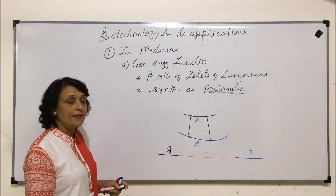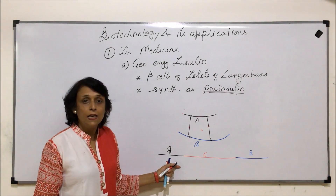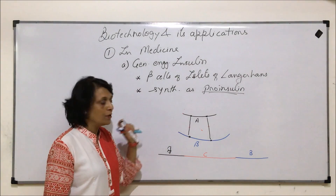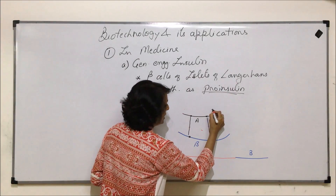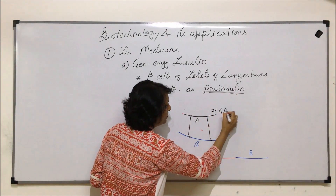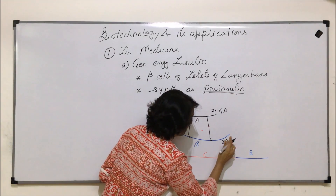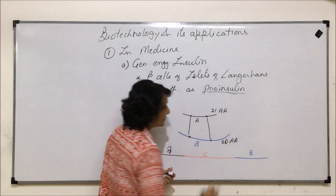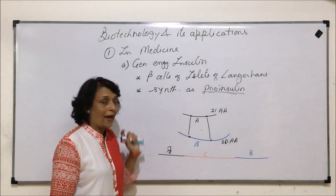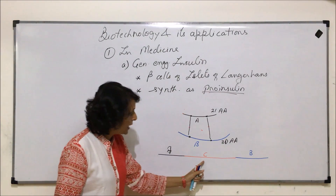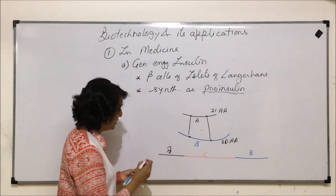Scientists thought: what is the need for C when we need only A and B to synthesize the regular insulin? The A chain has 21 amino acids and the B chain has 30 amino acids. Since there are three polypeptides being synthesized, there are three corresponding genes — a gene for A, a gene for C, and a gene for B.